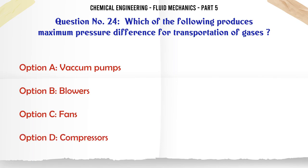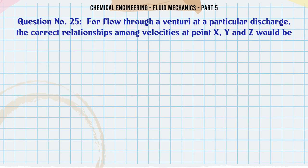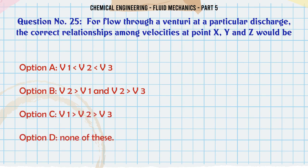Which of the following produces maximum pressure difference for transportation of gases? a) vacuum pumps, b) blowers, c) fans, d) compressors. The correct answer is compressors. For flow through a venturi at a particular discharge, the correct relationships among velocities at point x, y, and z would be: a) v1<v2<v3, b) v2>v1 and v2>v3, c) v1>v2>v3, d) none of these.